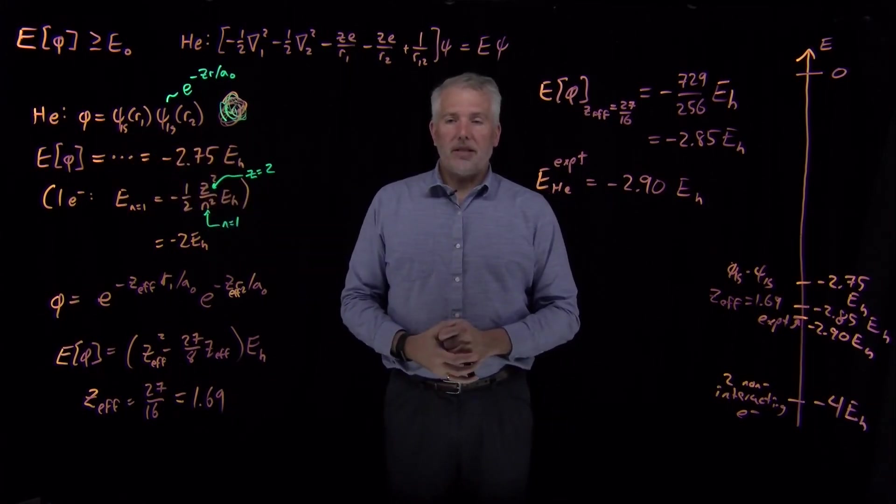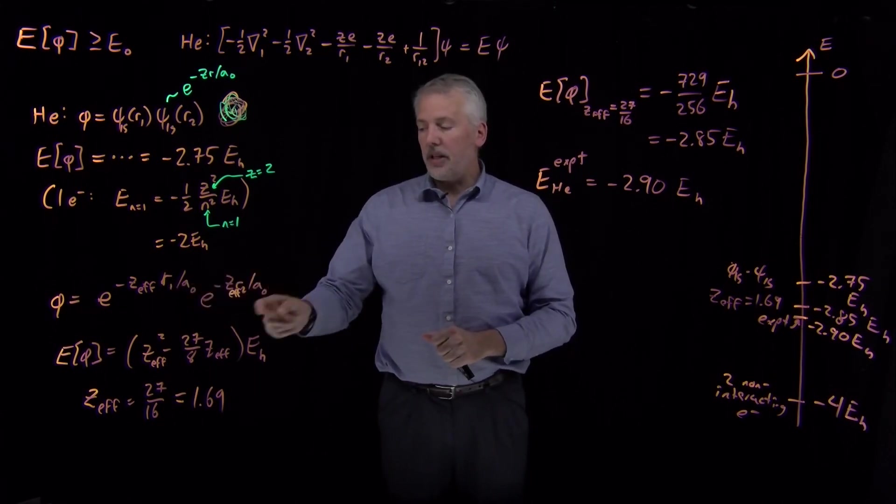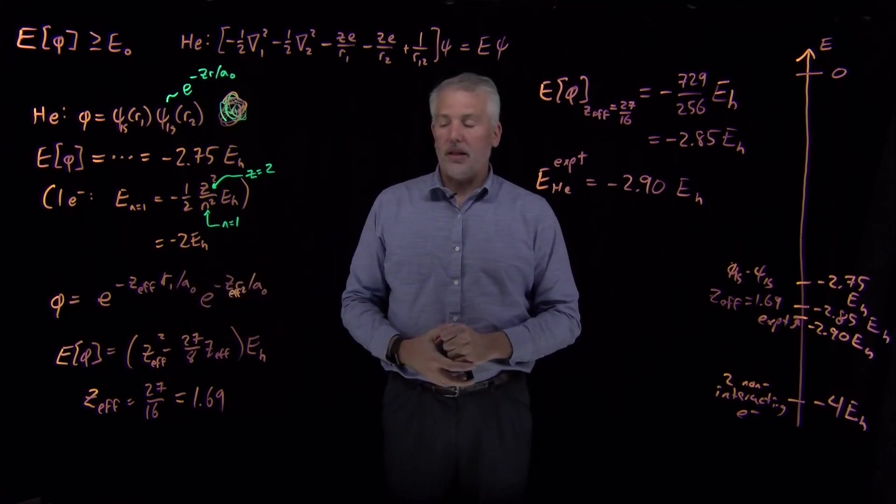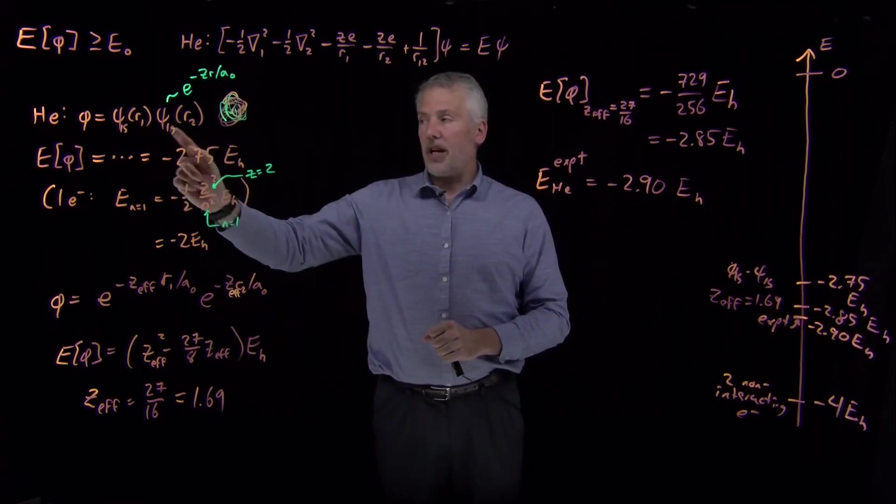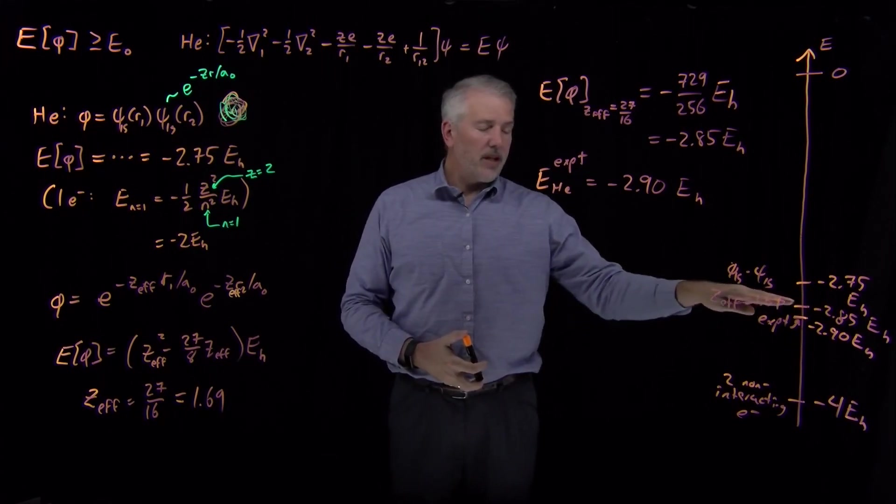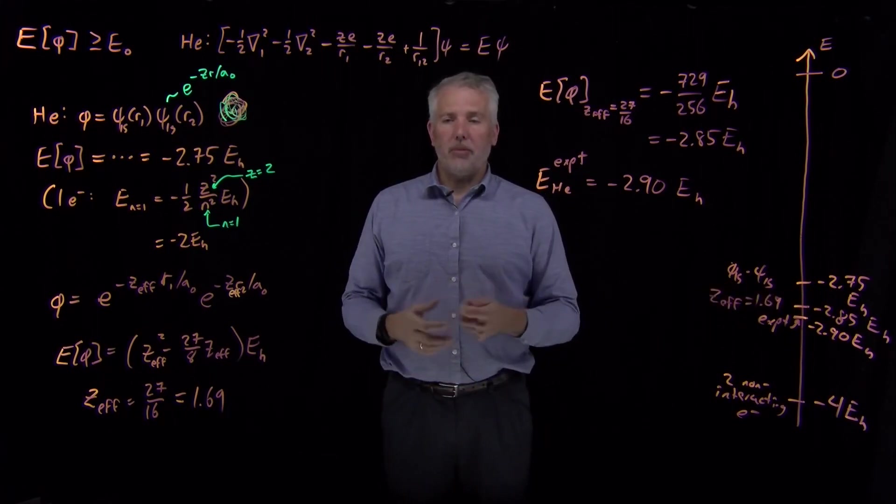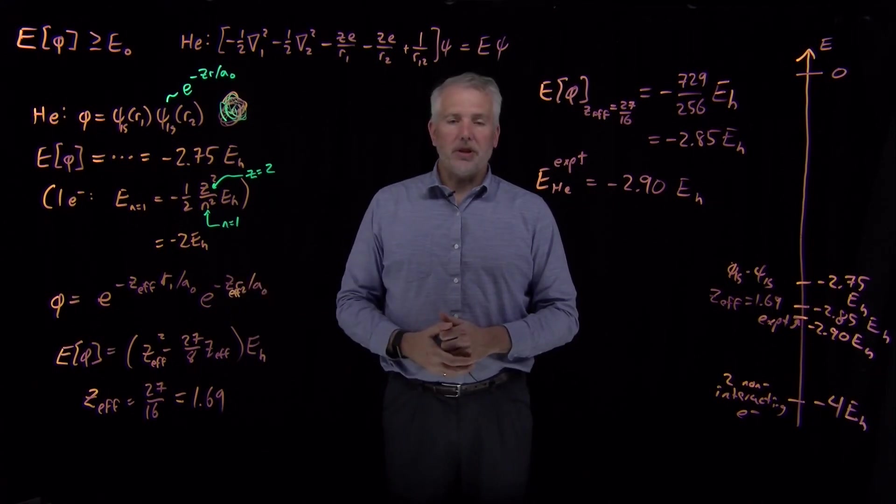That missing 2% that I can't get with the variational expression in this case comes from assumptions I've made in this form of the energy that aren't necessarily true. In fact, the true wave function isn't necessarily a spherically symmetric exponential function. And in fact, the true wave function is not a product of two different one-electron functions. So if I want to do better than this 98% level, I'd have to come up with a more clever way of writing a wave function that doesn't make those particular assumptions.